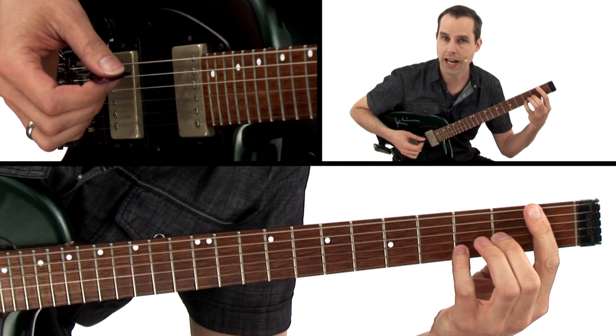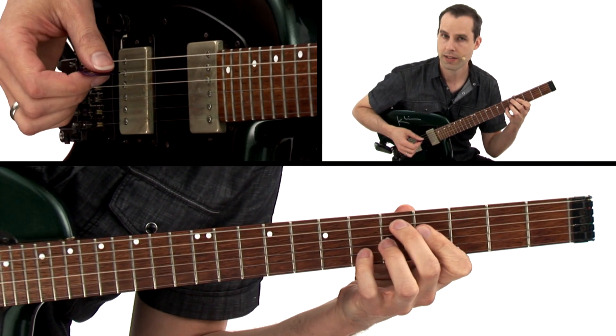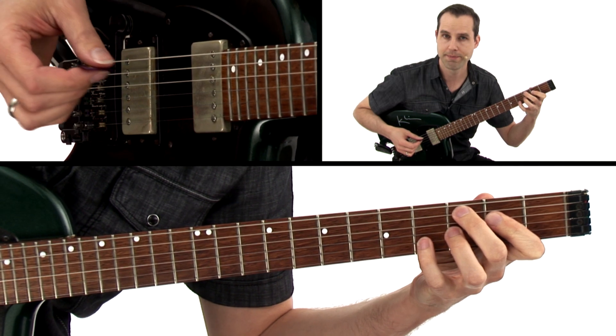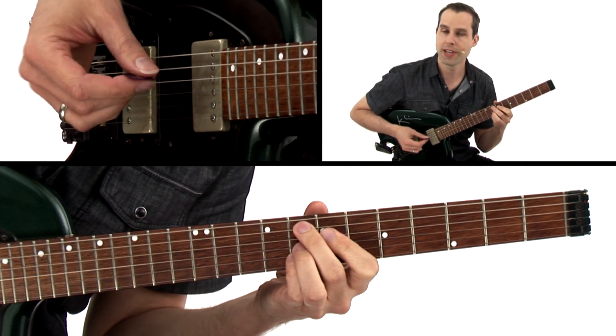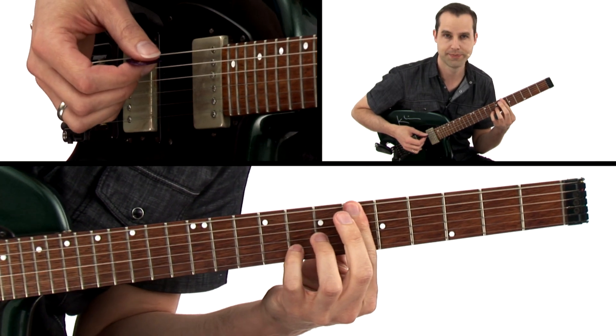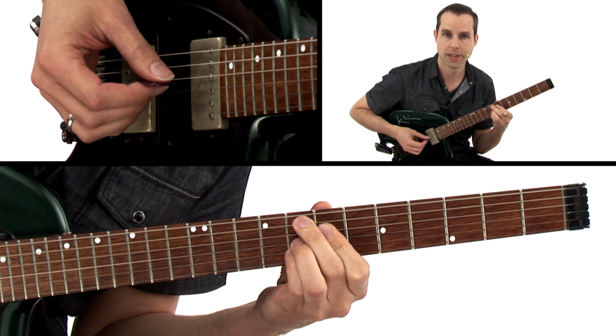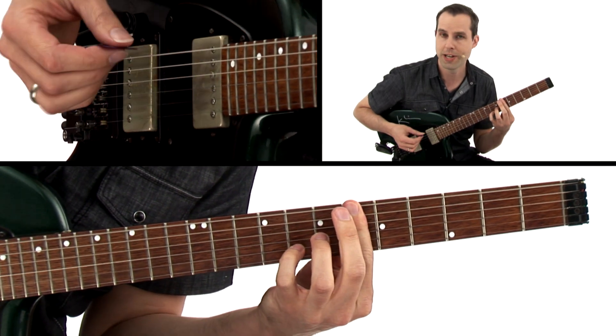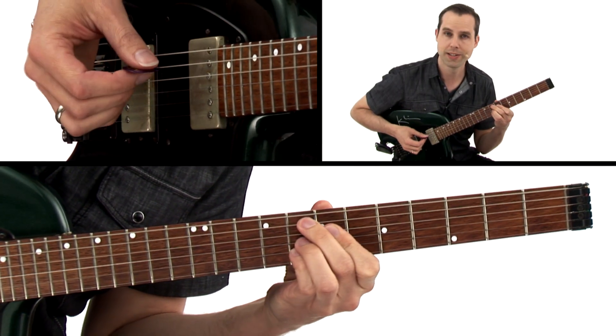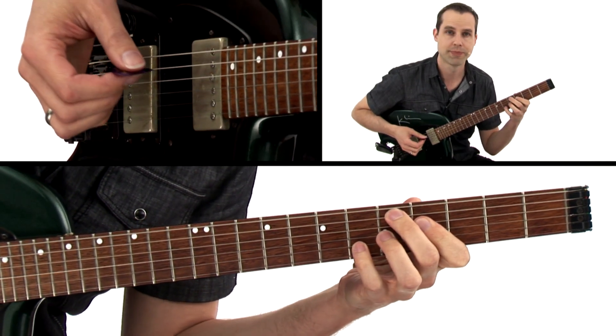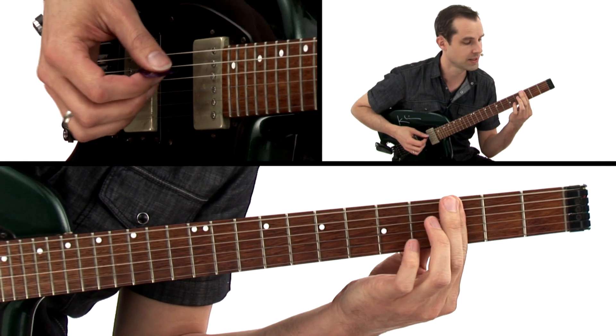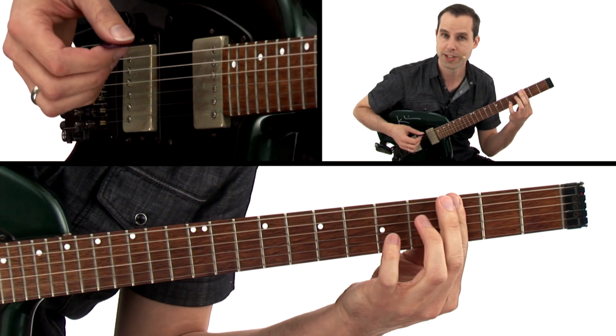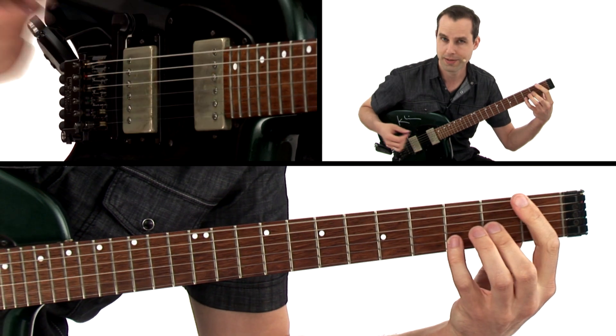Now for the turnaround, F13 to D7 sharp 9, G minor 7, C7 sharp 9. The turnaround is F13, D7 sharp 9, Gm7, C7 sharp 9, back to the top.